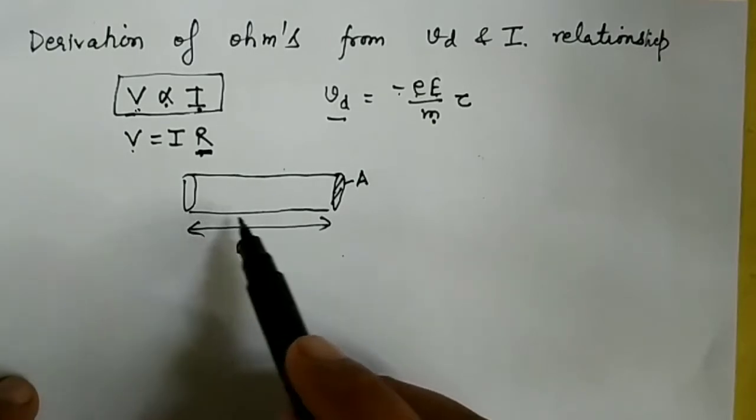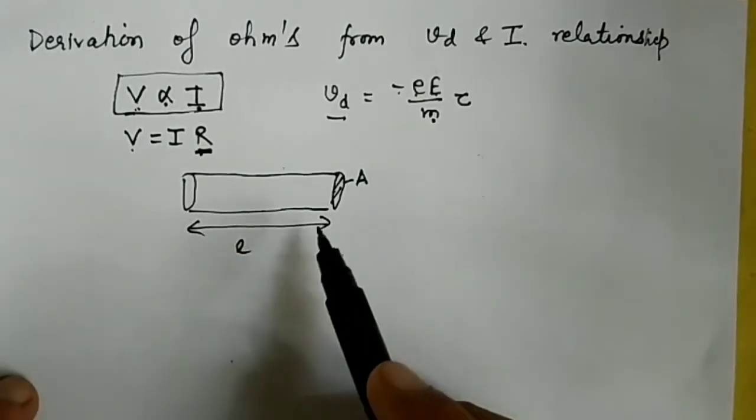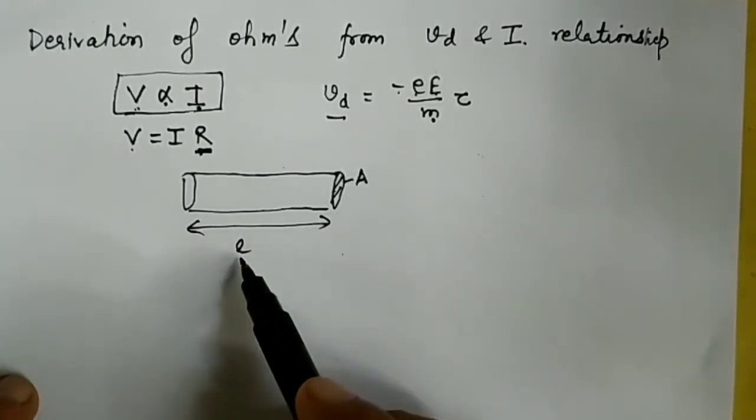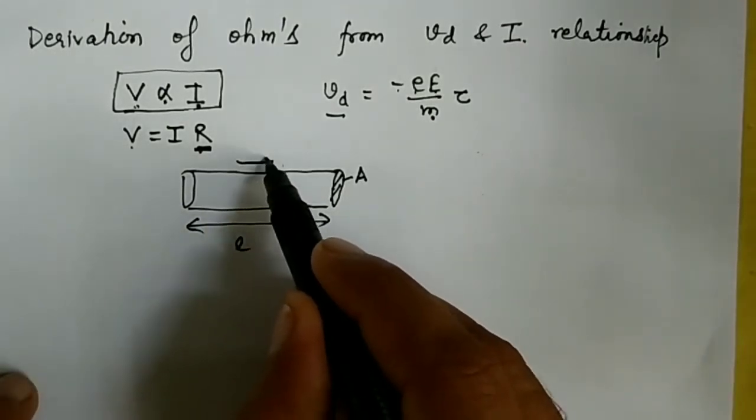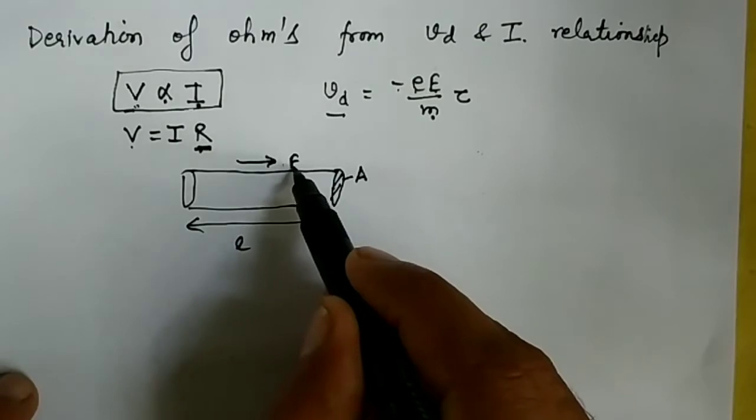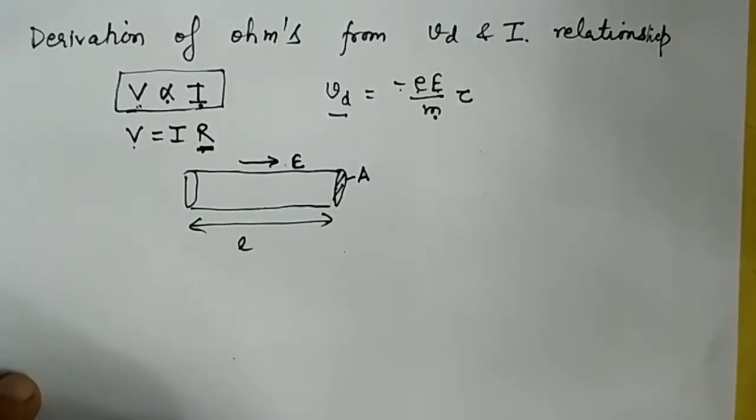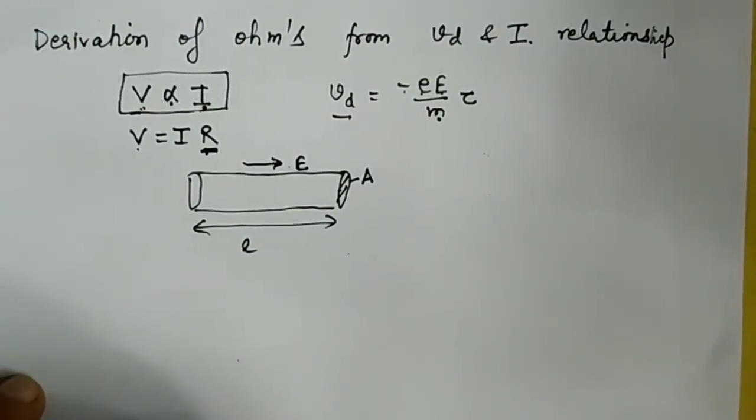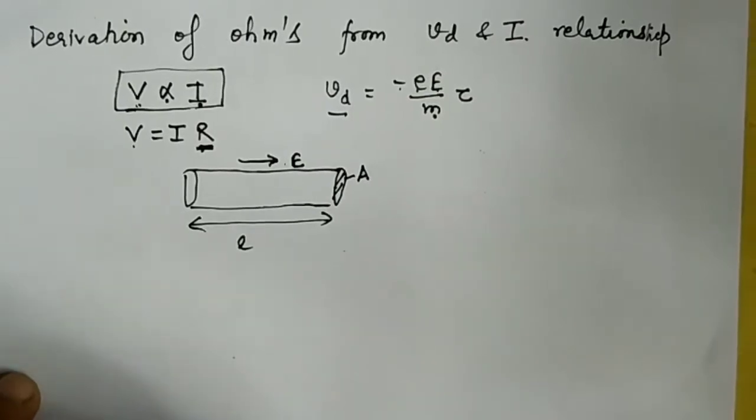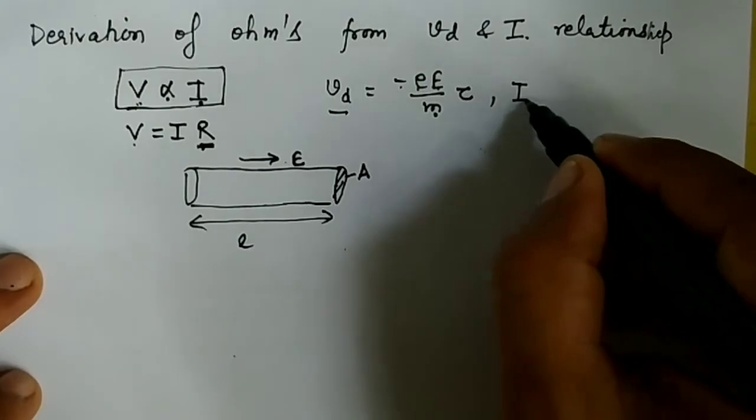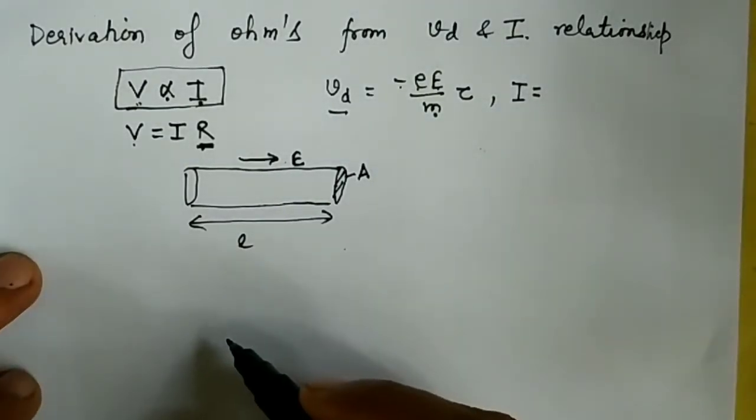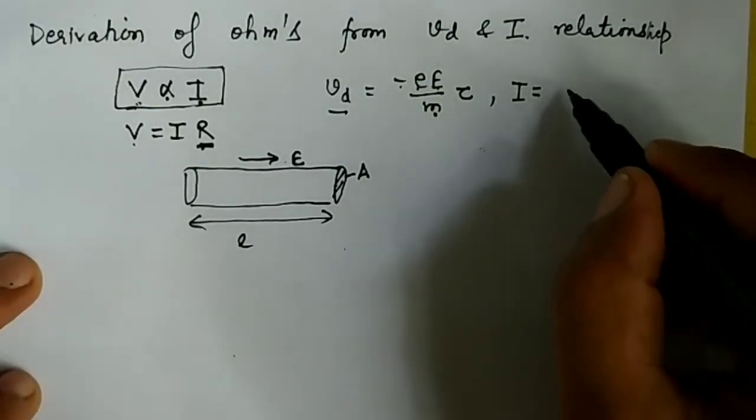For a particular conductor, I consider this section of conductor having area of cross-section capital A and length l. E is the electric field developed because of the battery attached across this conductor. We also know that for this conductor with number density n, the current is given by minus n e A vd.